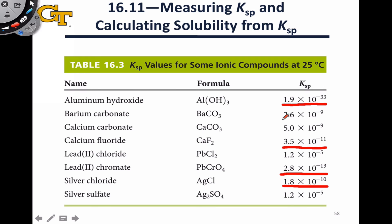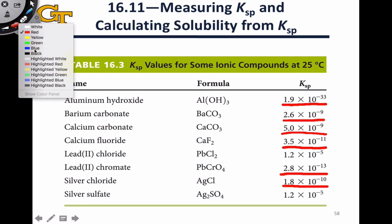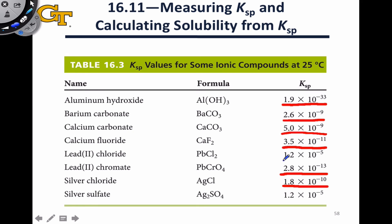Others that are pretty darn insoluble but with slightly larger Ksps, barium carbonate, calcium carbonate. The two on this list that have the greatest solubility are lead chloride and silver sulfate, although both of these still have fairly small Ksp values as well.